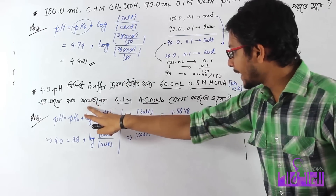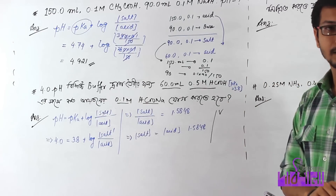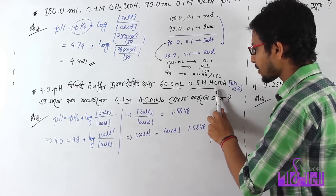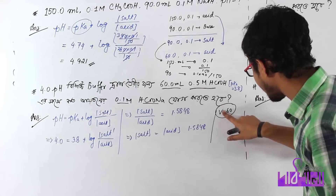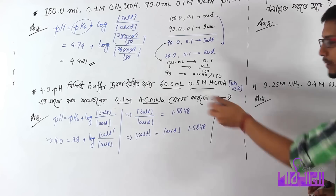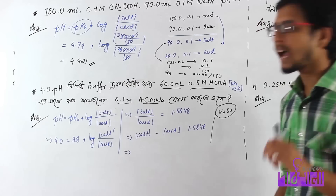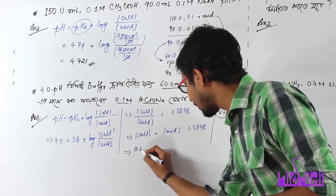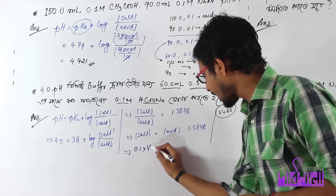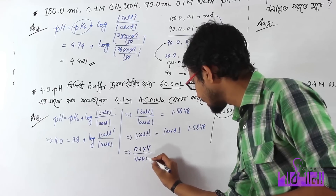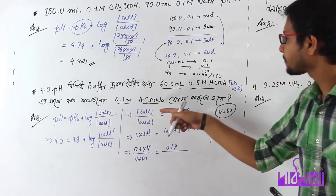So the salt concentration gives us 1.5848 times the acid concentration. Here, we need to find the volume V. This expression is V plus 60. The value is 0.1 into V plus 60 for the salt concentration, and the acid concentration involves the total volume.